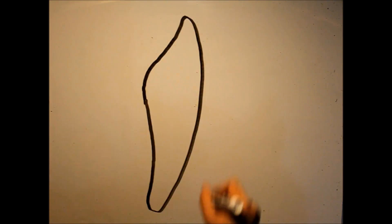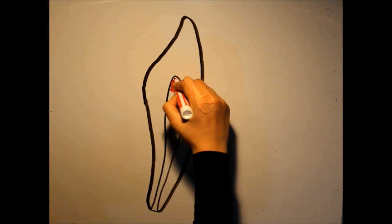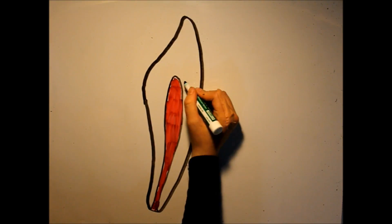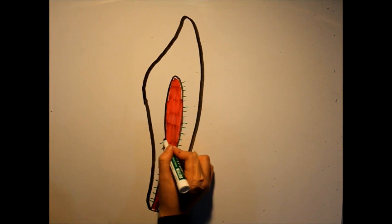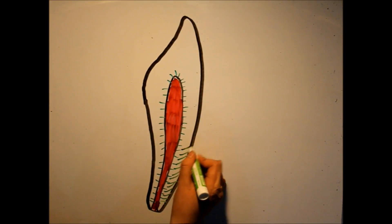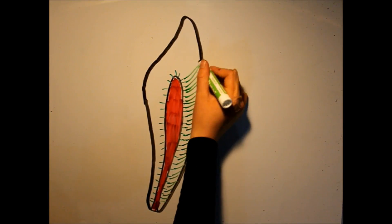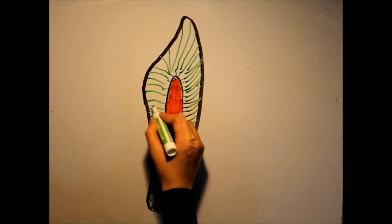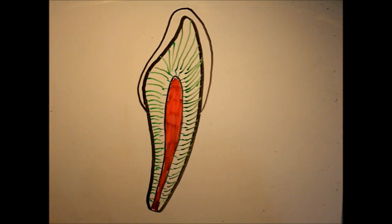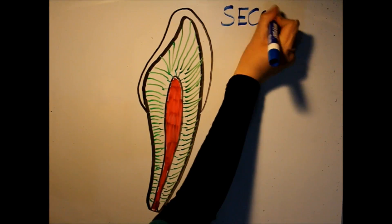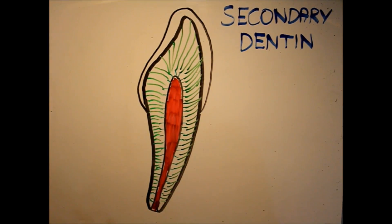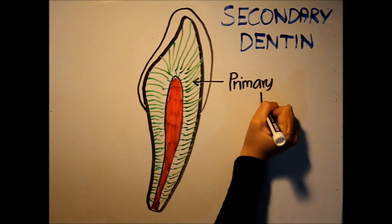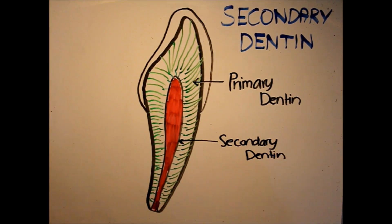After root formation is complete, the formation of secondary dentin will begin. The secondary dentin is found below the primary dentin surrounding the pulp chamber. As you get older and odontoblasts continue secreting secondary dentin, your pulp chamber will decrease in size. This is known as pulp recession. The fiber orientation of secondary dentin is continuous with that of primary dentin. You can recognize the difference between the primary and secondary dentin through the differences in their staining.